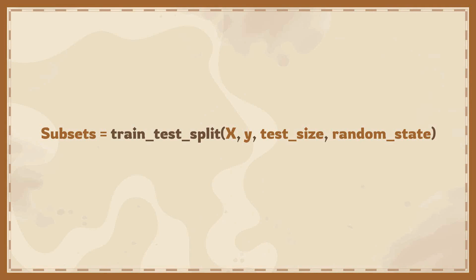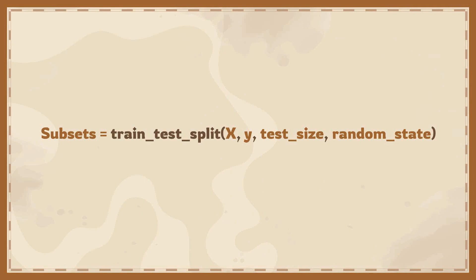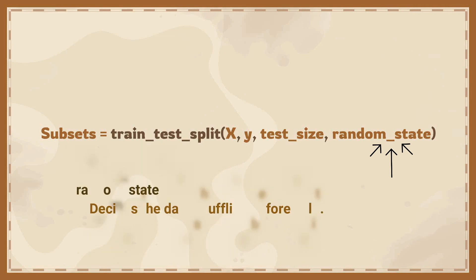In the same way, if you specify the train size, that will automatically specify the test size. To specify either test size or train size, we need to use a real value between 0 and 1. The next argument is random_state, which represents the random seed value. This value controls how the data is shuffled before splitting.